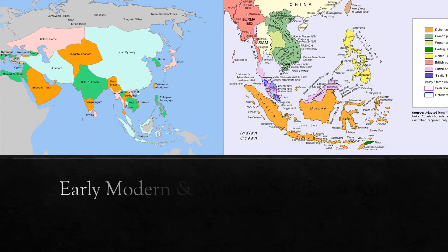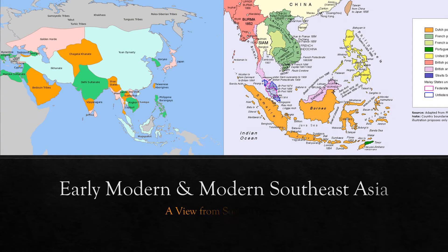In this discussion, we are going to cover the transition from early modern to modern Southeast Asia. You'll be looking especially at the area on the left-hand side of the slide with Majapahit, Lupuri, Angkor, and Champa on that particular map.